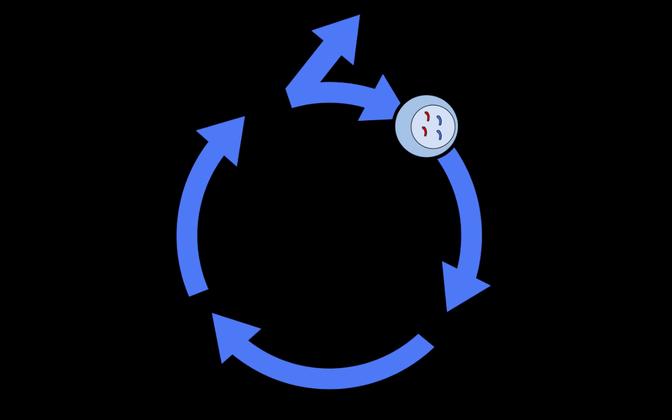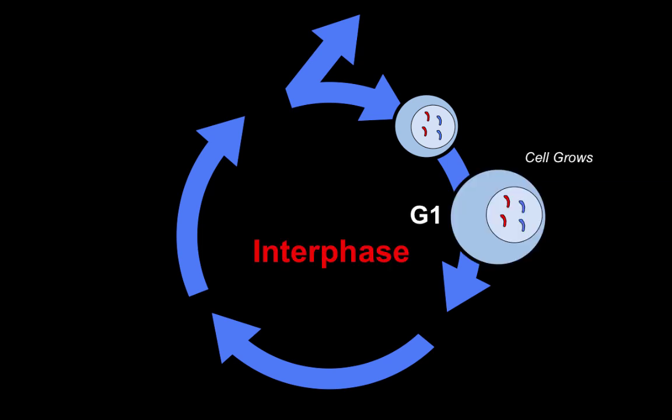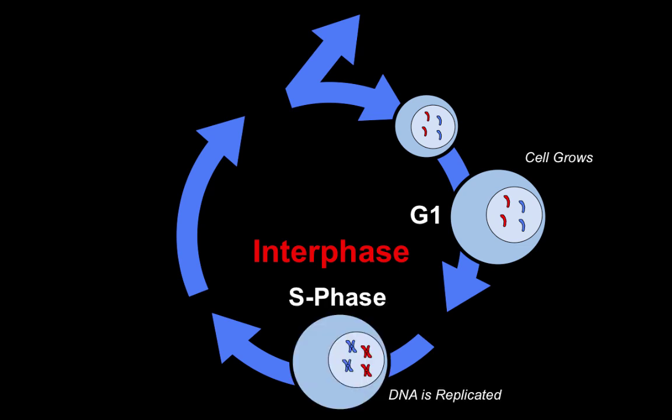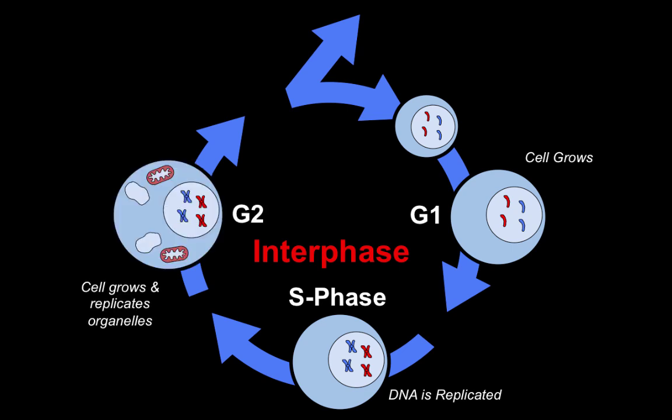So if we look at this all together, here we have our cell entering the cell cycle into interphase. In G1, it gets bigger. In S phase, it replicates its DNA. Note how it now has those Xs, so the sister chromatids. In G2, it's going to grow a little bit more and it's going to replicate the organelles so that both new cells have all the organelles. Then we're going to divide the nucleus, then the cell, and we're going to end up with two new cells.